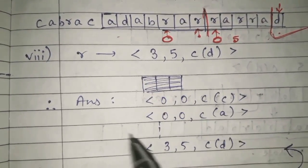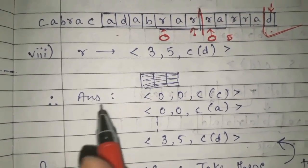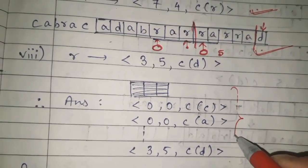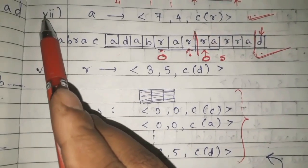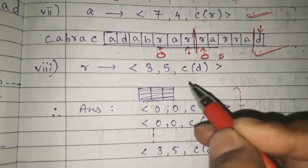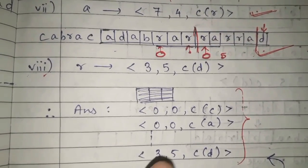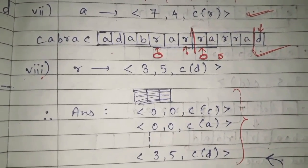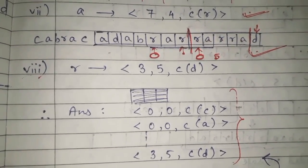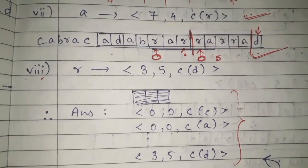The complete answer for LZ77 encoding is all eight triplets written together. This is the whole method for LZ77 encoding. In the next video I will show you how to decode using LZ77. I hope you have understood encoding well. Thank you.